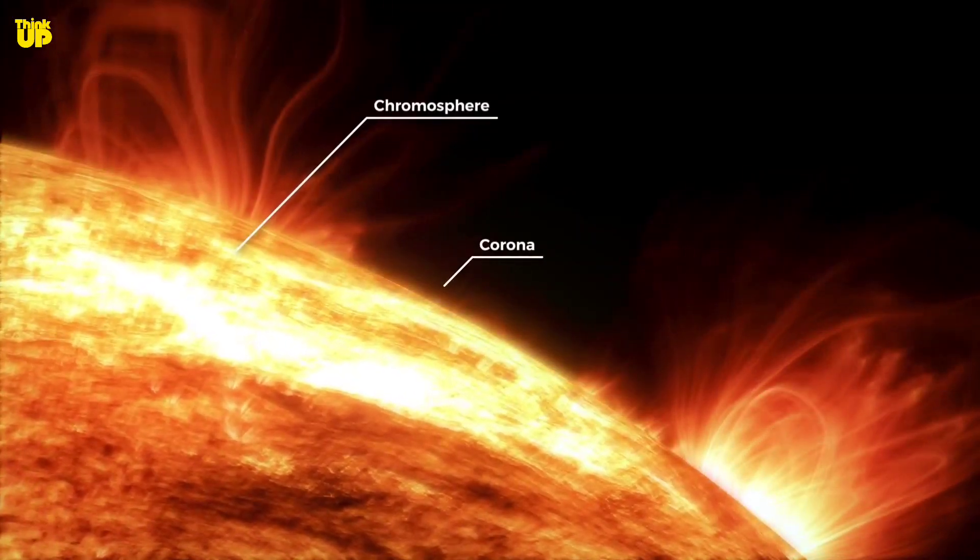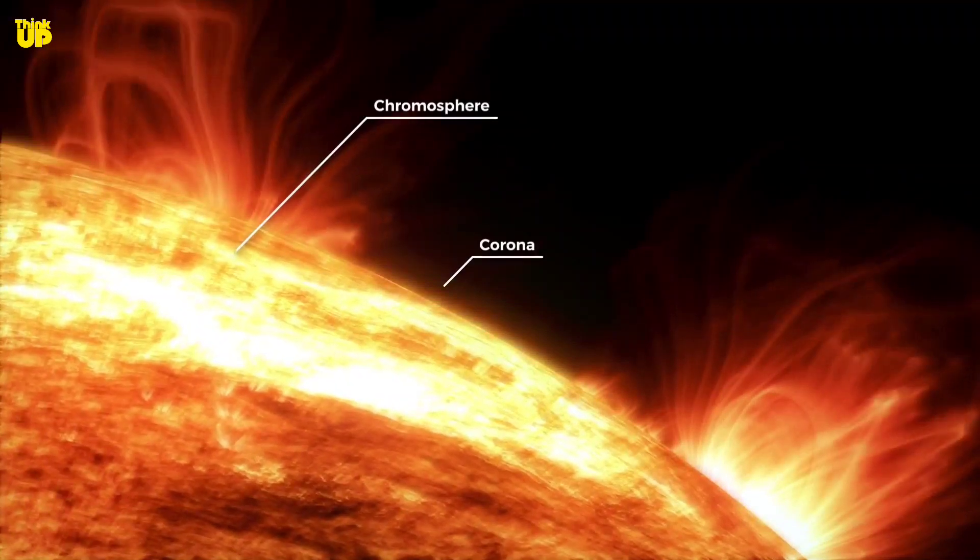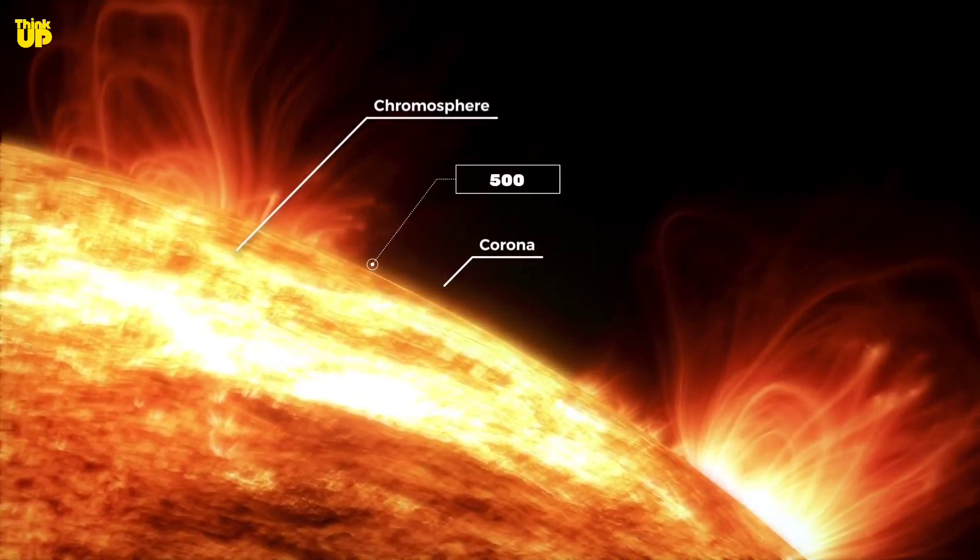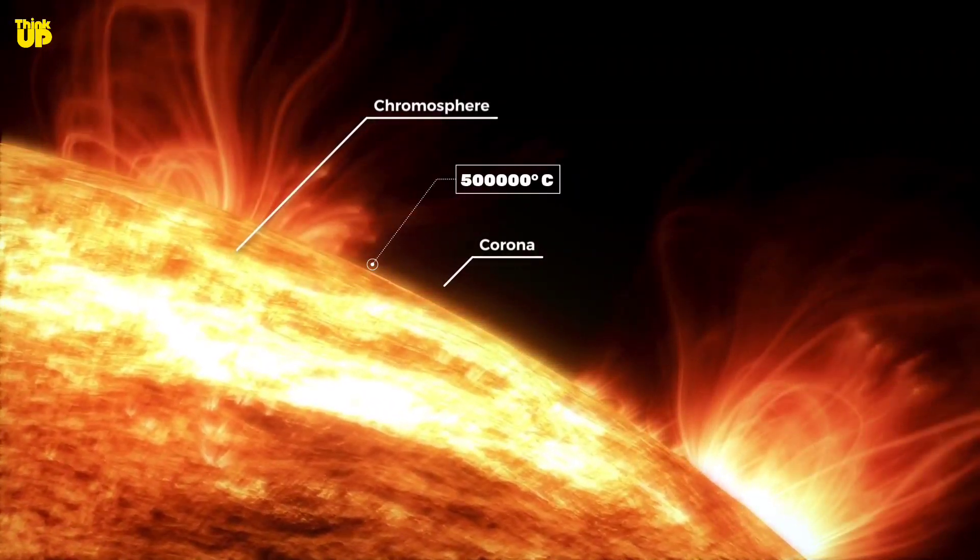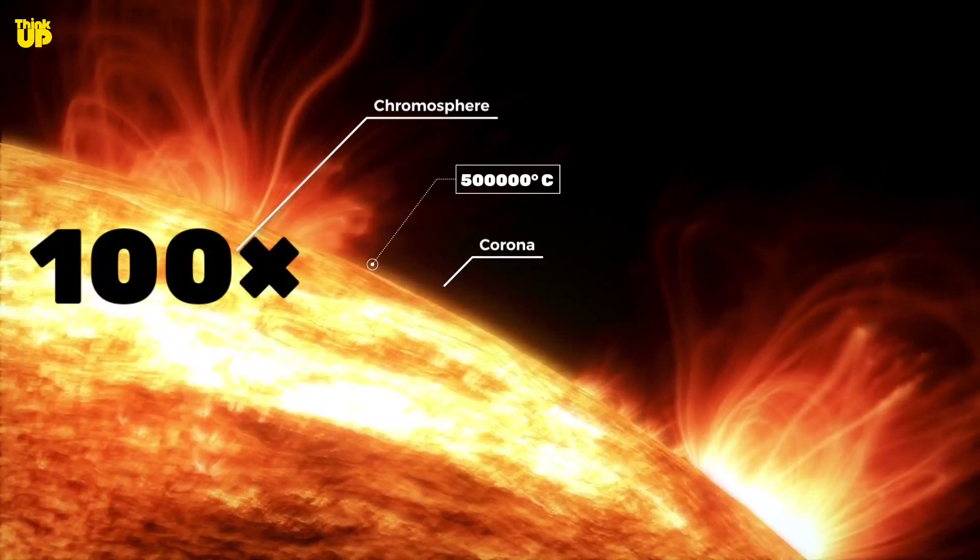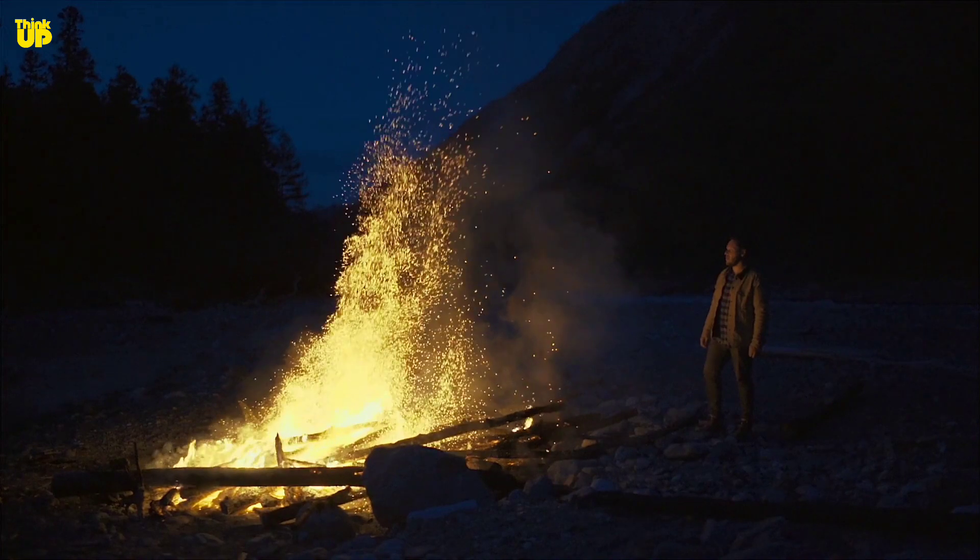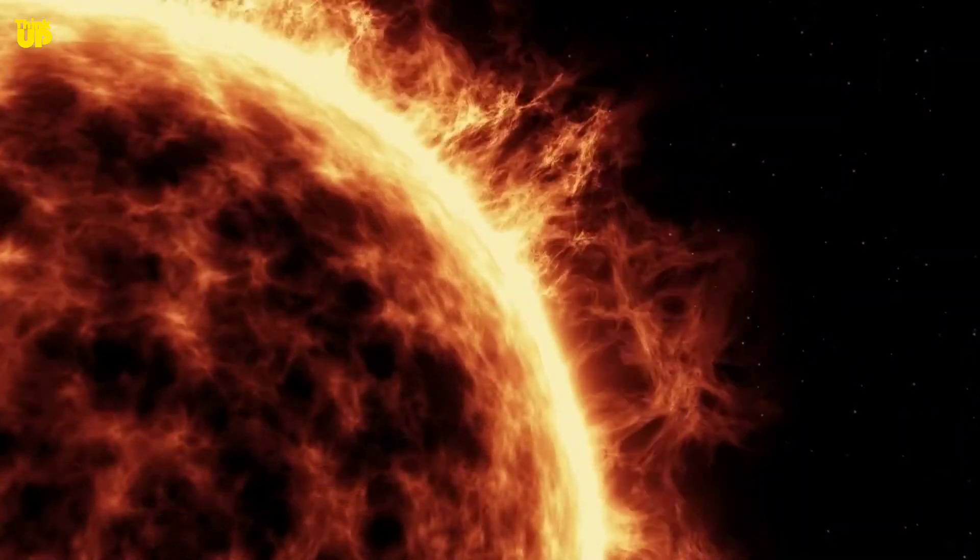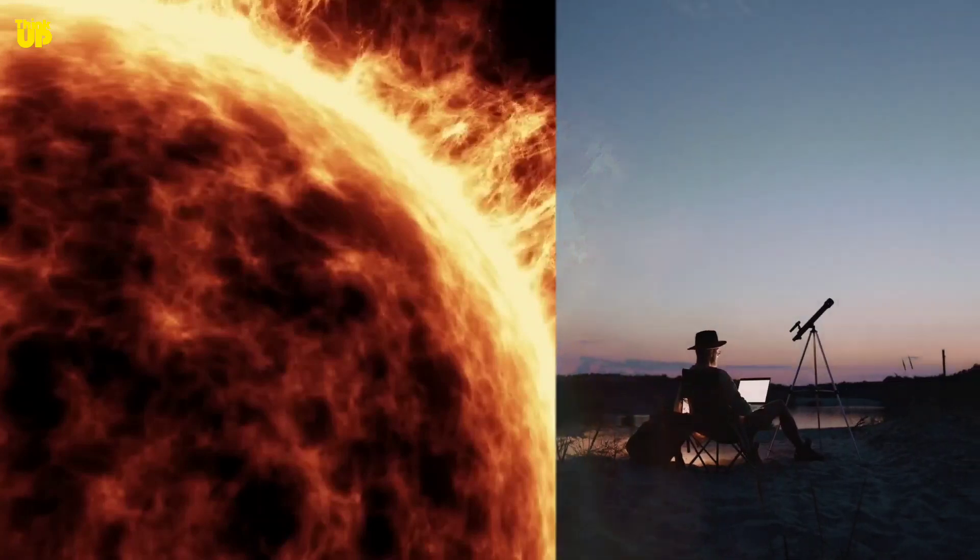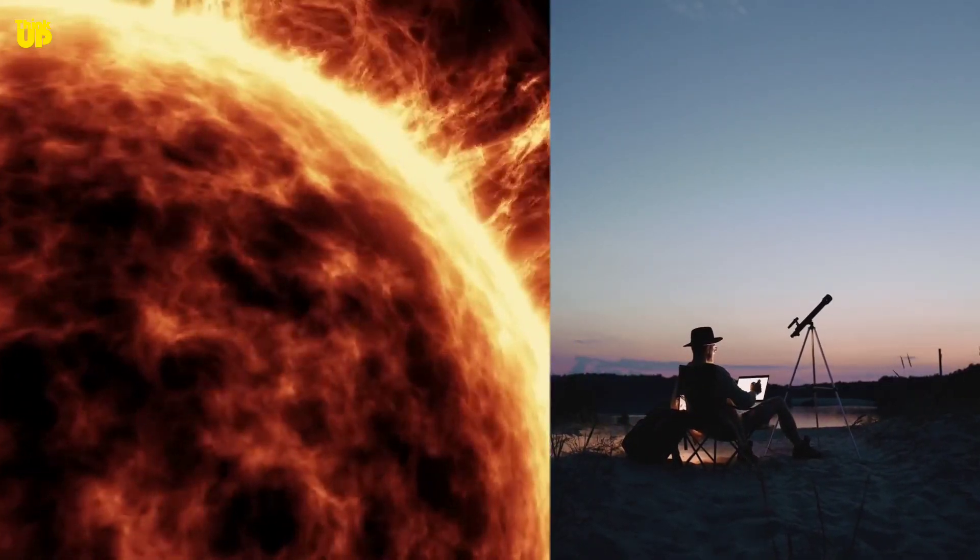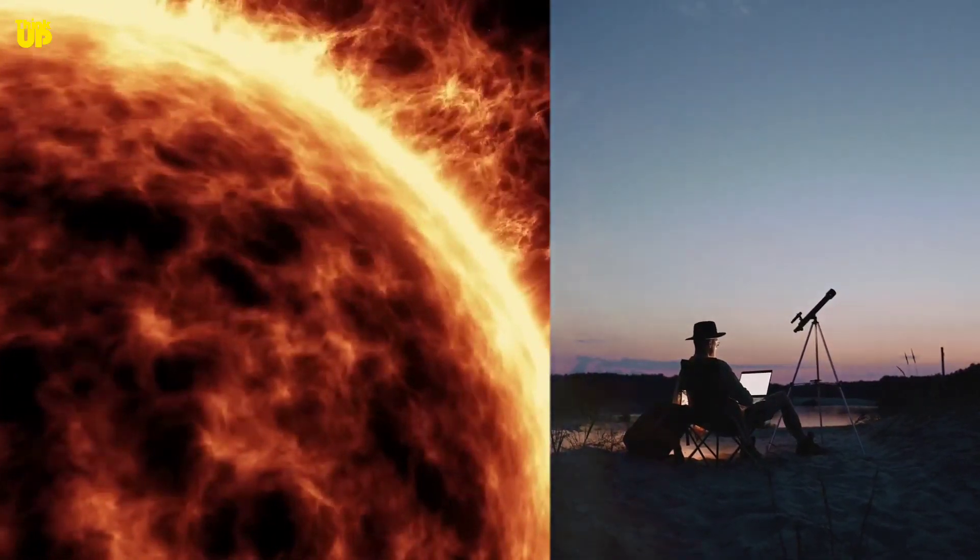Whereas the temperature of its outermost atmospheric layer, the corona, is more than 500,000 degrees Celsius. That is 100 times more than the surface of the sun. It's like being away from a fire makes us feel hotter. This is a highly unusual phenomenon that scientists have been continuously trying to understand for the past 100 years.